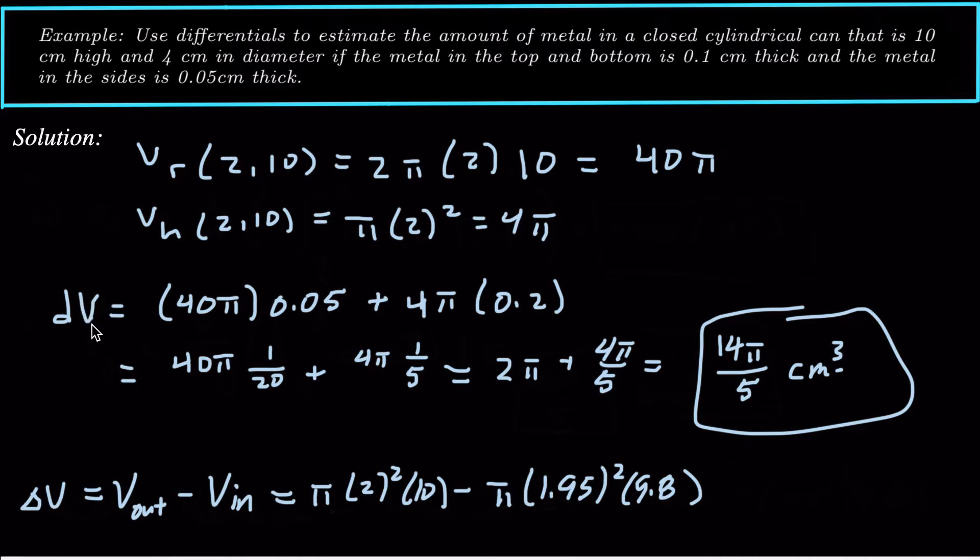So this dV, the differential, is approximating the actual delta V. That's the thing to remember. So this 14 pi over 5 is an approximation for this number down here. And you can evaluate both of these and kind of compare what they are. But that's the idea of a differential. It's an approximation for an actual change. And that's how we do it.